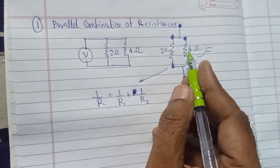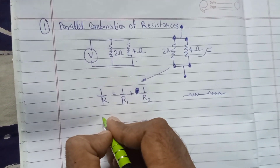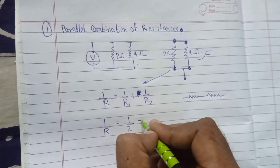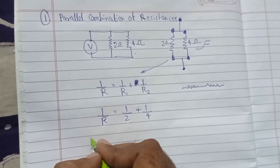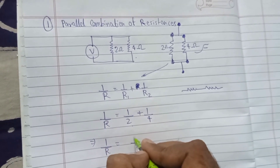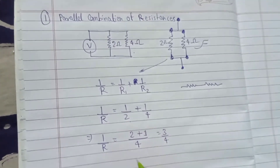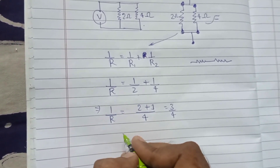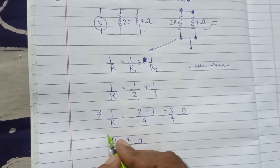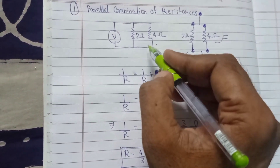Here R1 is 2 ohm and R2 is 4 ohm. To find equivalent resistance, I put the values into the formula: 1/2 + 1/4. Taking LCM of 4, we get 2/4 + 1/4 = 3/4. Taking the reciprocal, the final resultant resistance is 4/3 ohm.